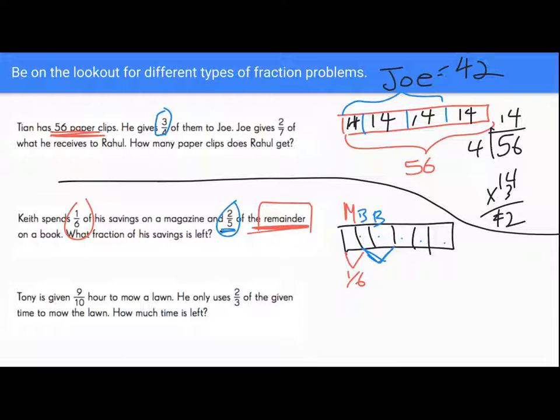It's actually two-sixths, because we have to think about the whole bar model. So now we look back at our question. We want to annotate what fraction of the savings is left. One, two, three. He has three-sixths left, which is equal to one-half.